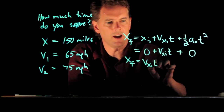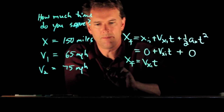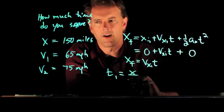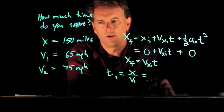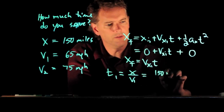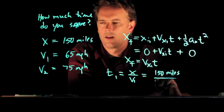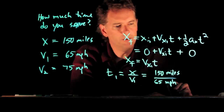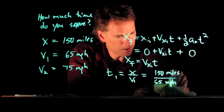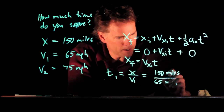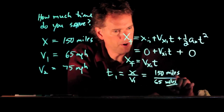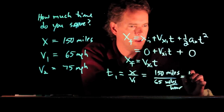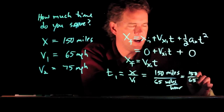And so you get a very simple relationship here between distance and speed: X equals Vxi times t. So what is the time t1? It is how far you go, x divided by V1. X is 150 miles. V1 we said was 65 miles per hour. This is miles per hour, so the miles cancel out, and we end up with 150 over 65 hours.